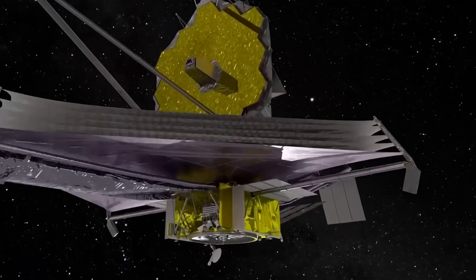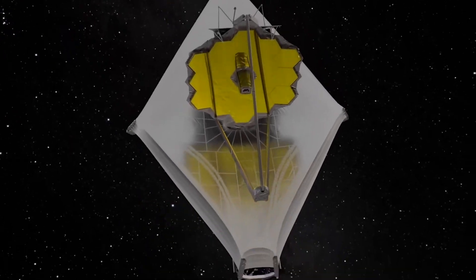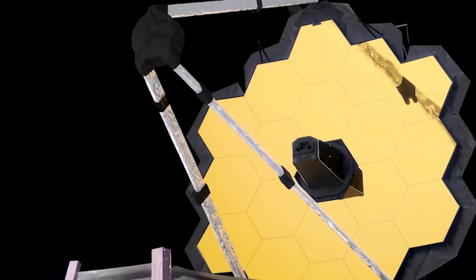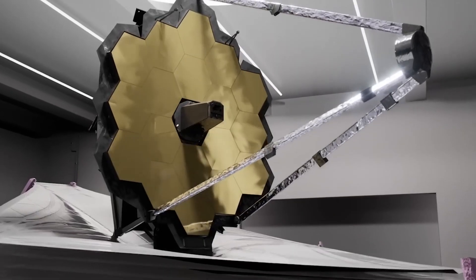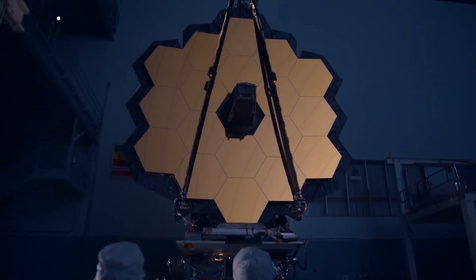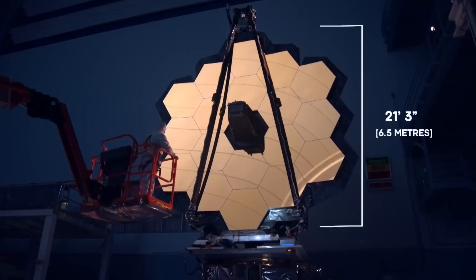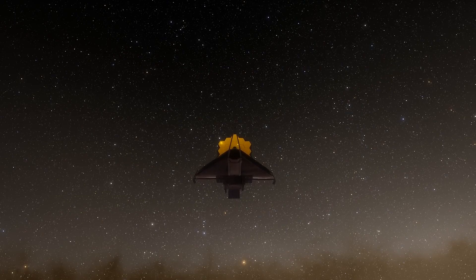One of the things that makes James Webb so special is its gigantic mirror. There are various things that make the primary mirror on James Webb special and incredible. The first is the sheer size of the mirror. It's the largest one ever launched. The Webb mirror is around 6.5 meters in size. So if you can imagine that, that's bigger than most houses.